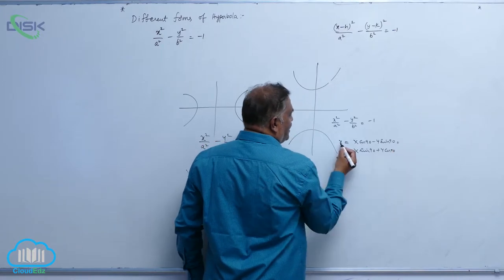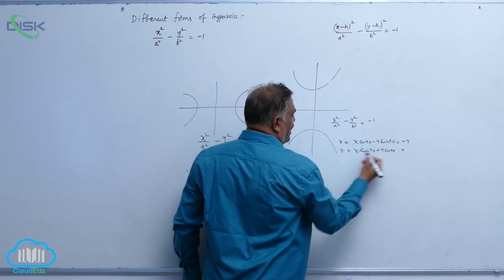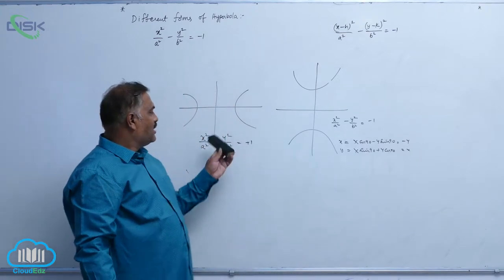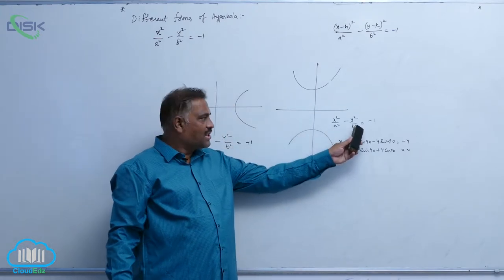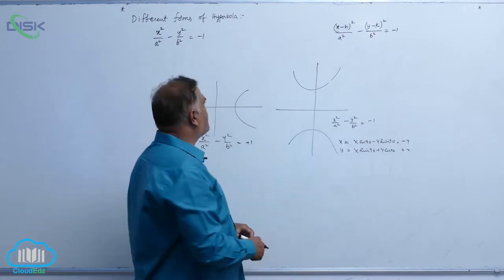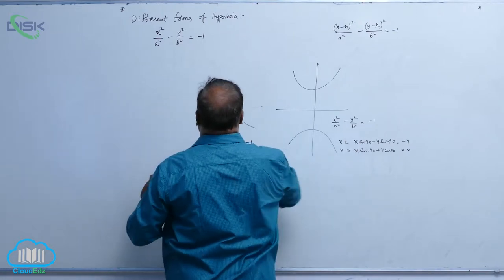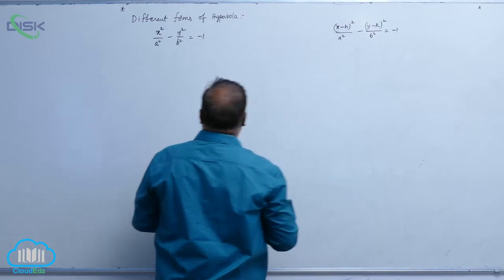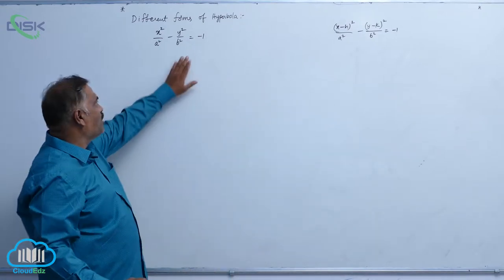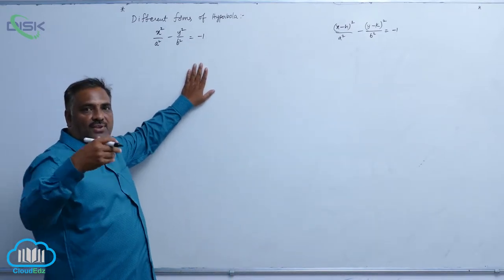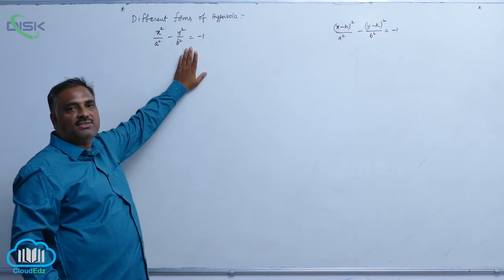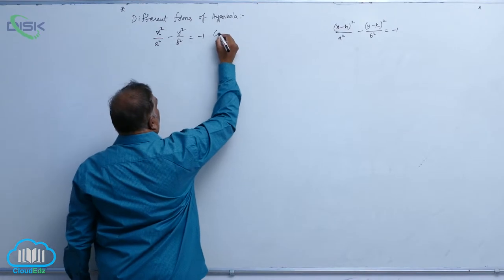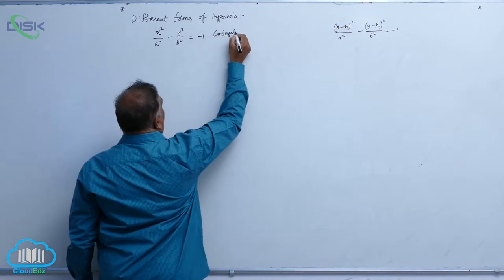That means this will become minus y and this will become x. On substitution, this curve will change to this type of format. If the original hyperbola is rotated by an angle of 90 degrees, the new format is called the conjugate hyperbola.